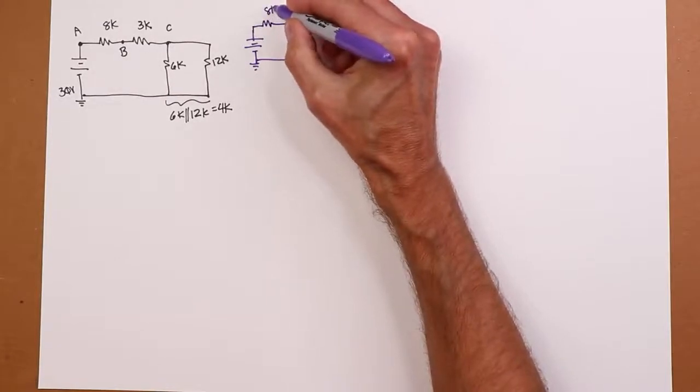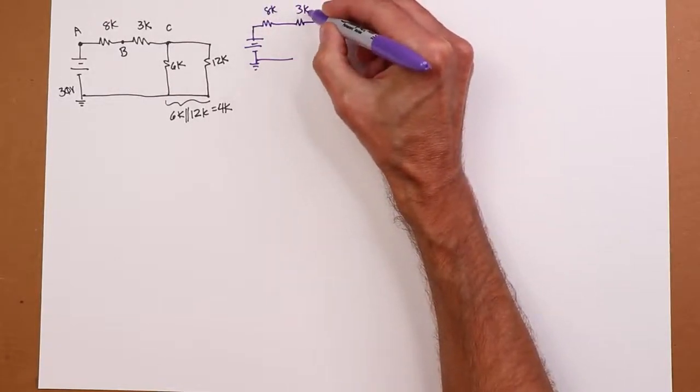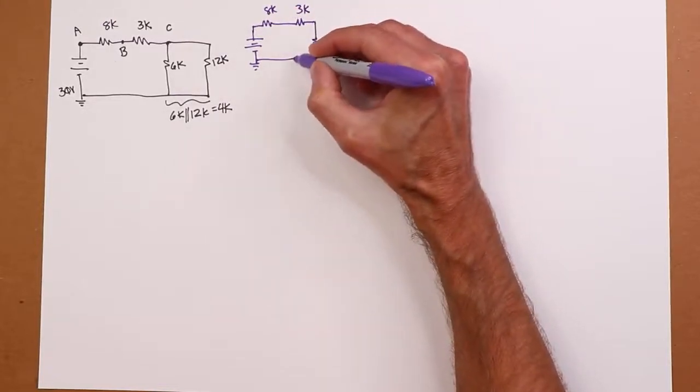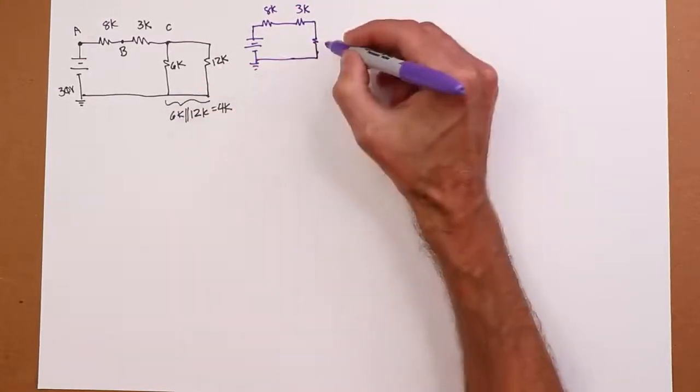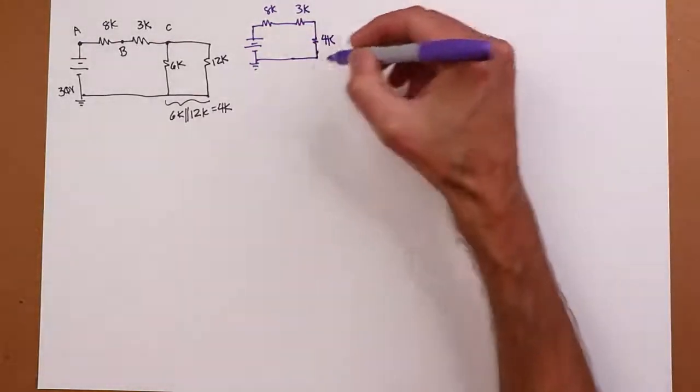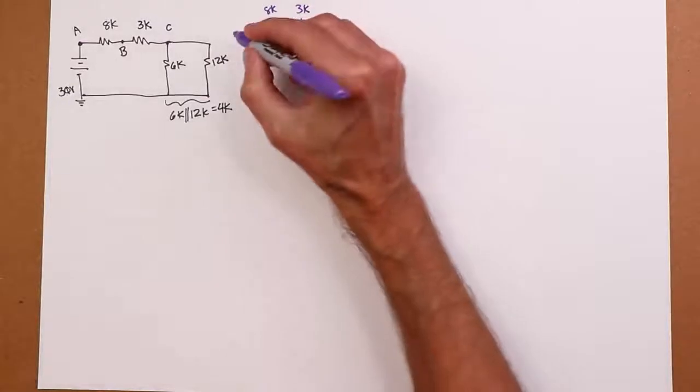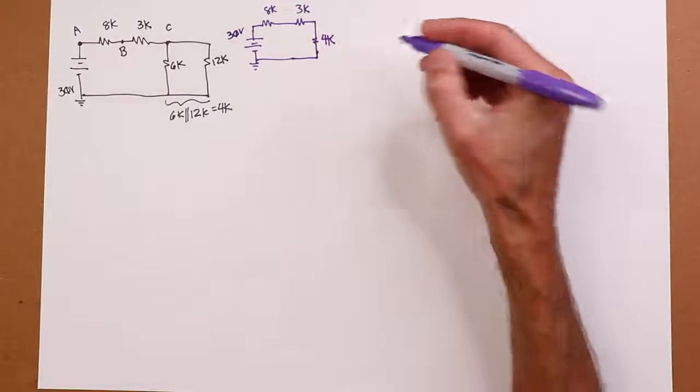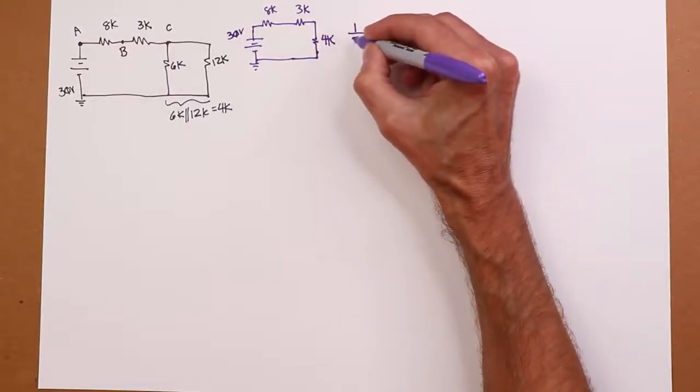But I'm just going to do this in a couple of steps. So here's my 8K. There's the 3K, right? Points A, B, and C. And then I replace the pair with their equivalent, a 4K. Now I can see, as a series circuit, I've got a total of 8 plus 3 plus 4, which is 15K. So this reduces finally to this.